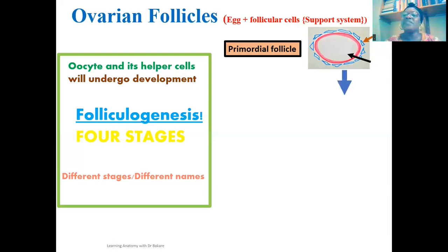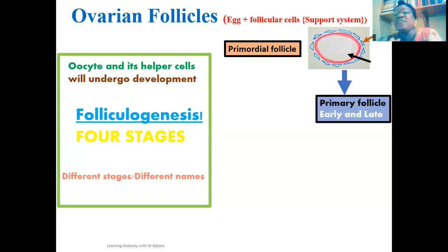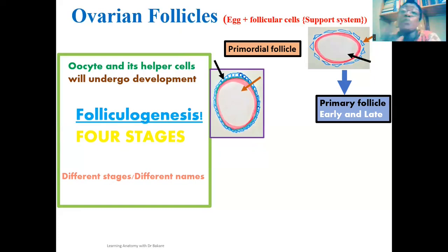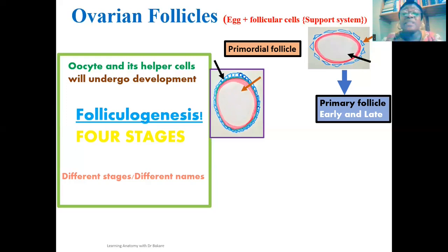During puberty, the primordial ovarian follicle is transformed into the primary ovarian follicle, which has an early stage and a late stage. In the early stage of the primary ovarian follicle, the oocyte is surrounded by a single layer of cuboidal cells. In the primordial follicle we had a single layer of flat cells — these flat cells are now transformed into cuboidal-type cells.